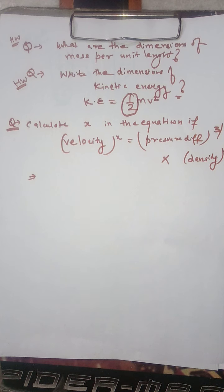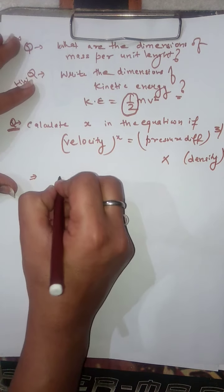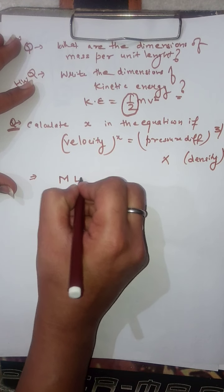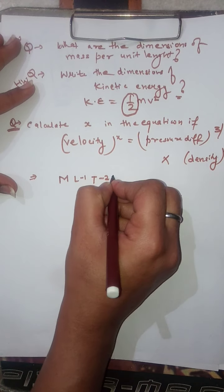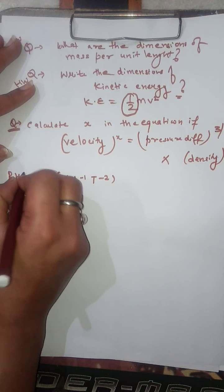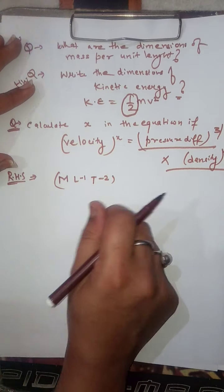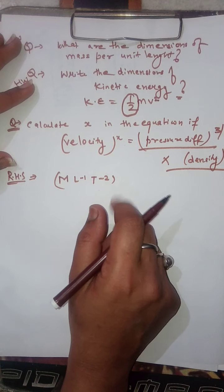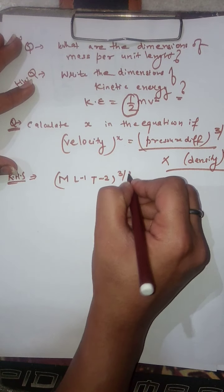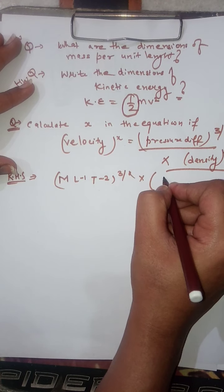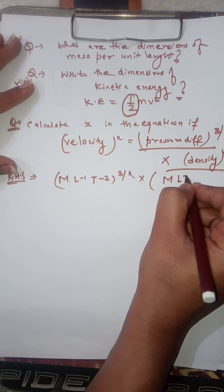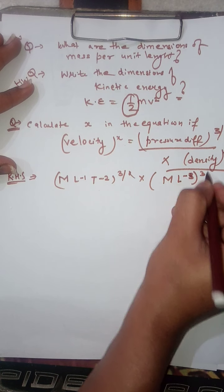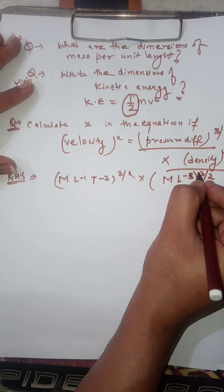We are going to solve the right hand side. Pressure has dimensional formula M L⁻¹ T⁻², raised to the power 3/2. Density is mass per unit volume, with dimensional formula M L⁻³, raised to the power minus 3/2.